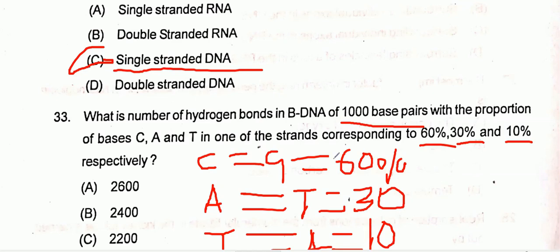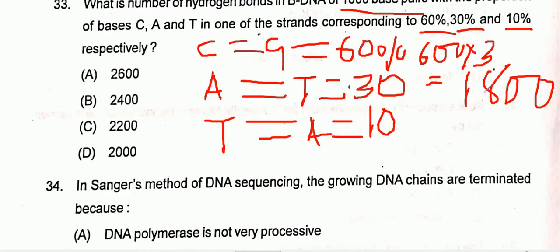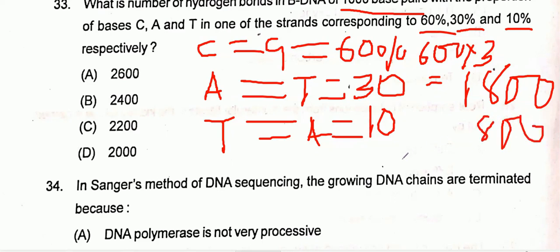When we calculate the hydrogen bonds: between G and C there are three hydrogen bonds, and between A and T there are two hydrogen bonds. So 600 × 3 = 1800 hydrogen bonds for GC pairs, and 400 × 2 = 800 hydrogen bonds for AT pairs. Finally, we get 2600 total hydrogen bonds, so option A will be the correct one.